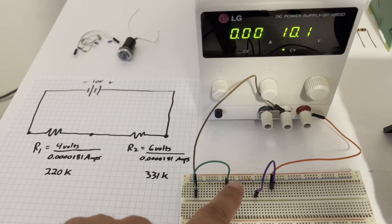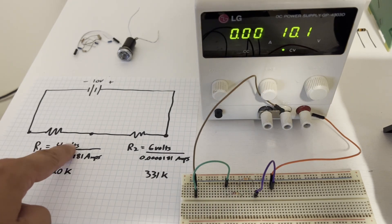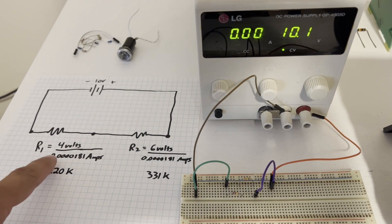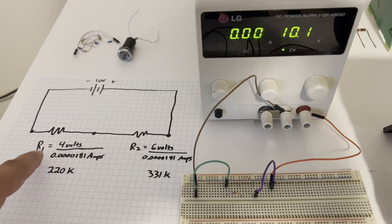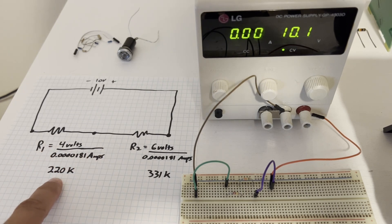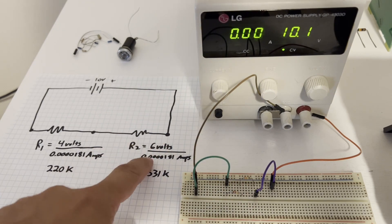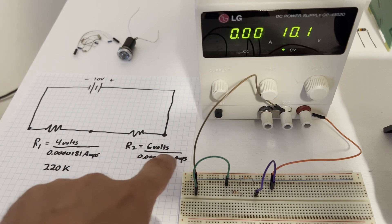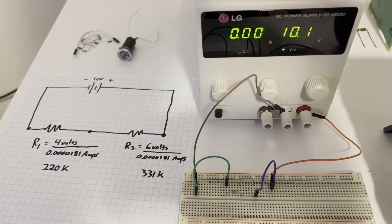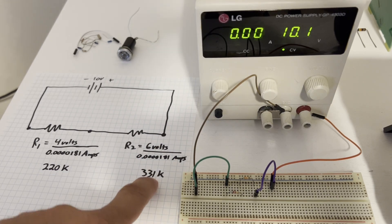So resistance is volts over amps. So we can see that's four volts divided by 0.0000181 amps is 220k. And our second resistor had six volts over that same 181 microamps. And so that ends up being 331k.